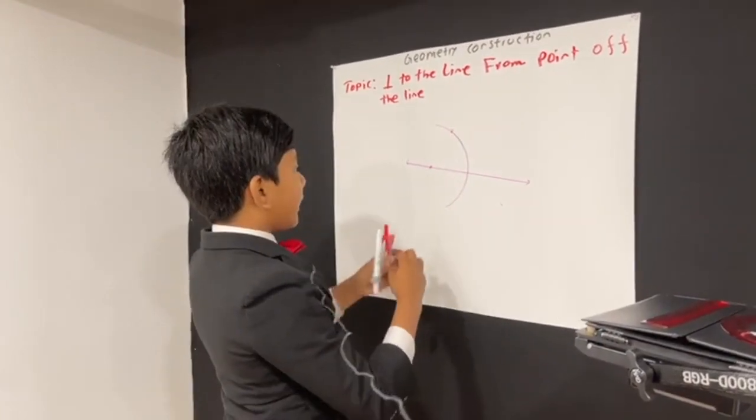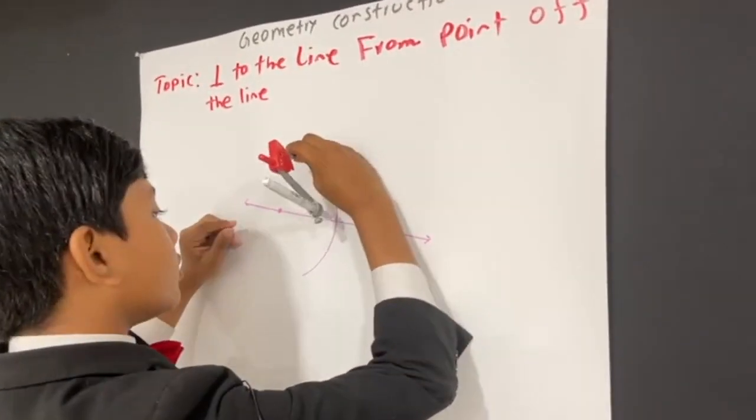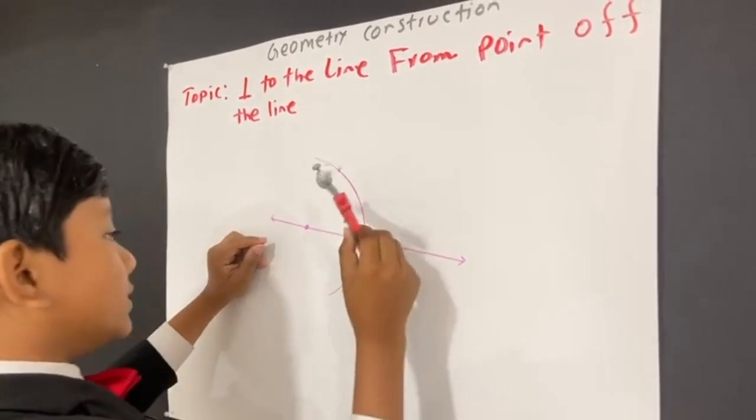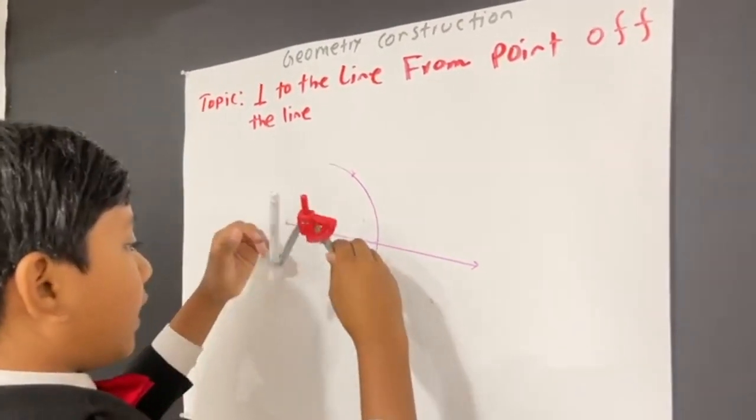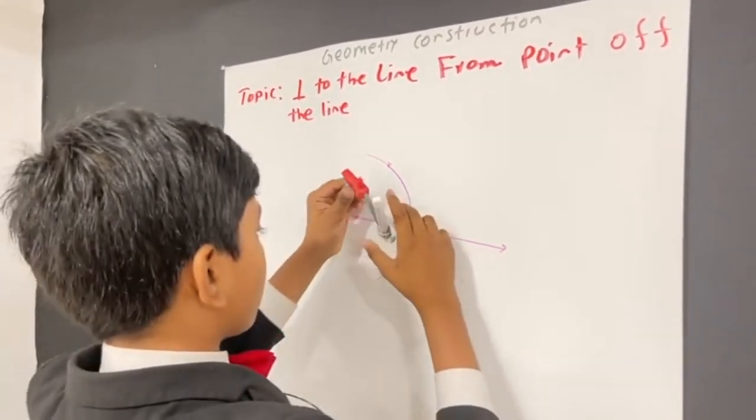Now, I'm going to find somewhere, like over here, for example, that I can draw another arc.